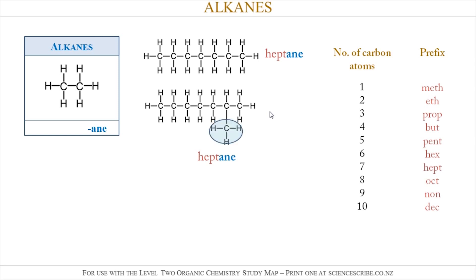Now, this side group hanging off is called a Methyl group — Meth — because it's only one carbon atom long, and we add the letters -YL to signify that it is a side group. This Methyl is on the second carbon atom from the right in that longest chain, so that makes it 2-Methyl-Heptane.